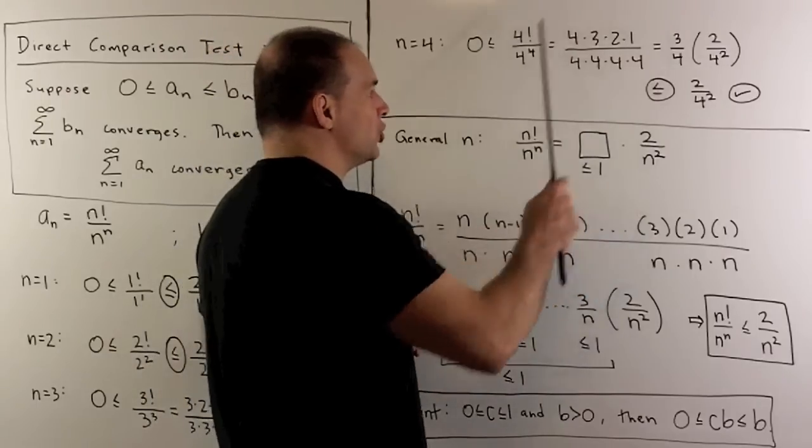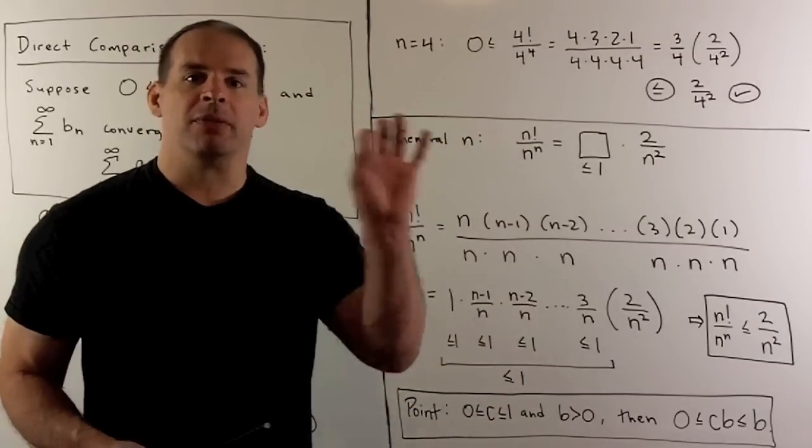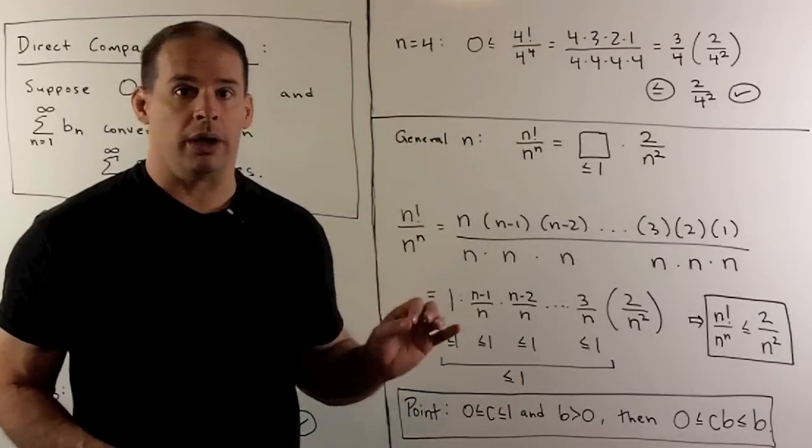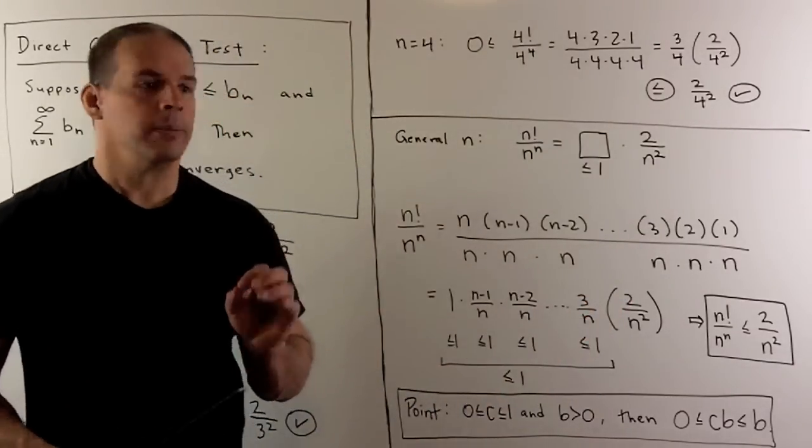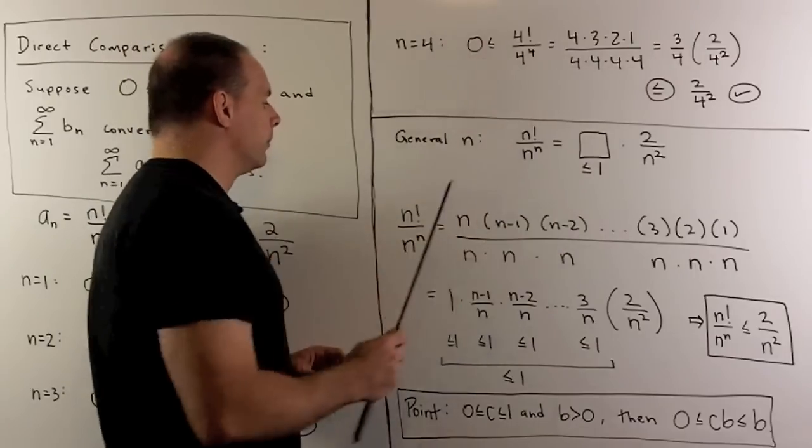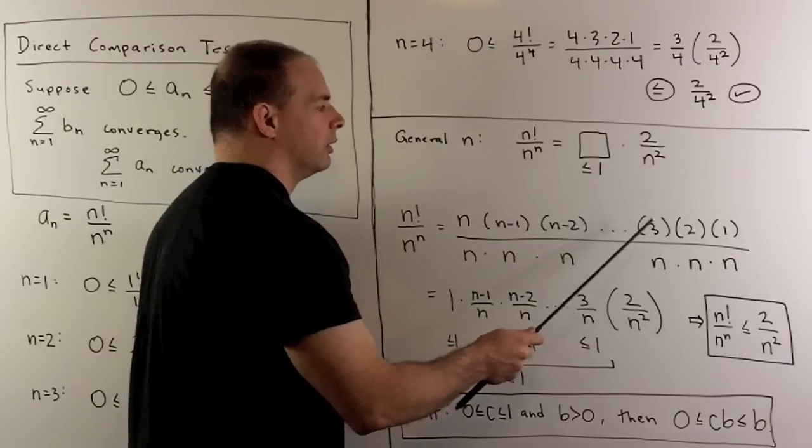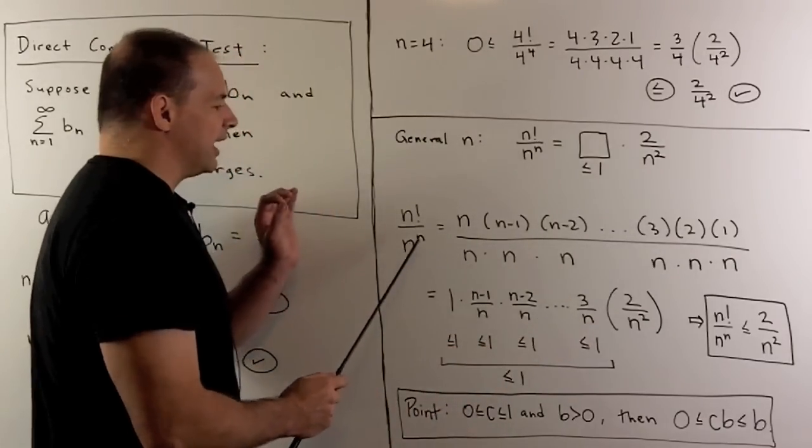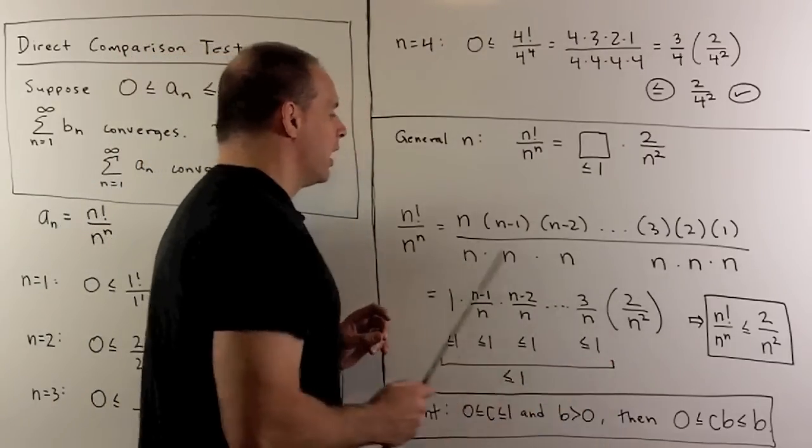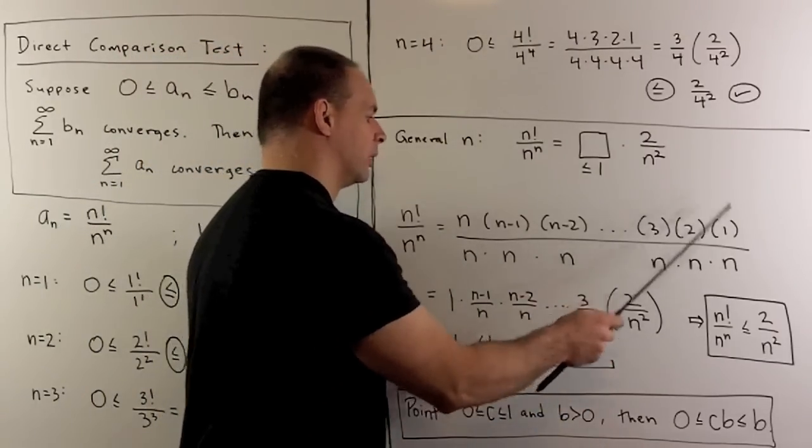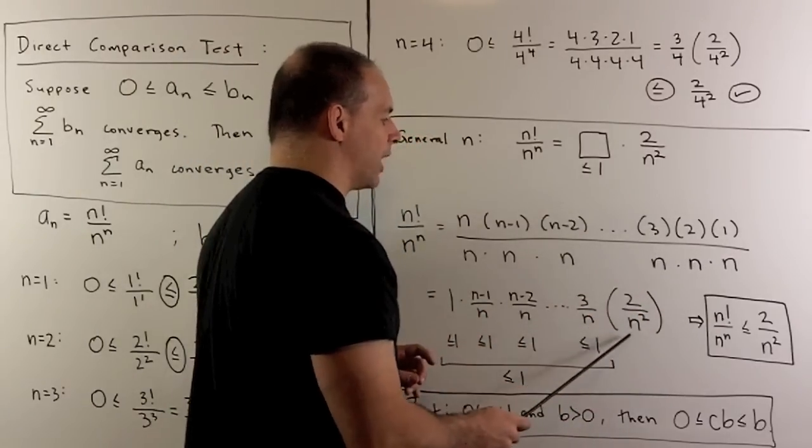Now, that's going to be the pattern I use in general. I keep the last two fractions to get 2 over n squared. Then everything before that is going to be less than or equal to 1. So, how do we work? Just like we did here. I take n factorial, write it out. So we have n, n minus 1, n minus 2, down to 3, 2, 1. We have n to the nth power, so it's going to be n of these n's. And these are going to line up nicely.